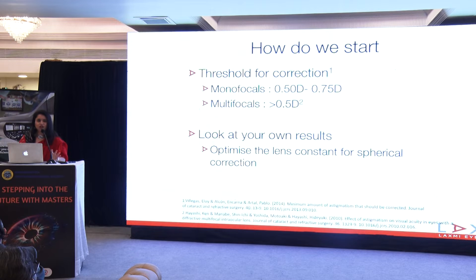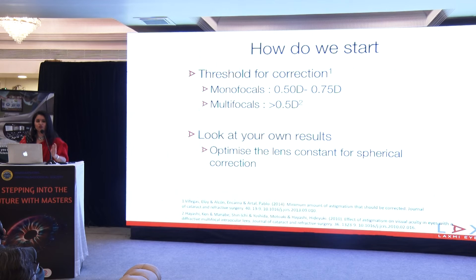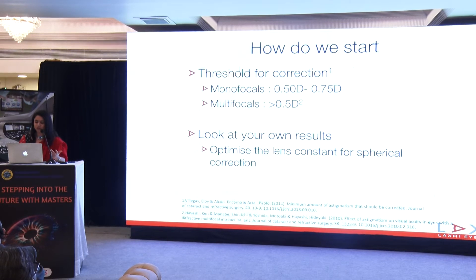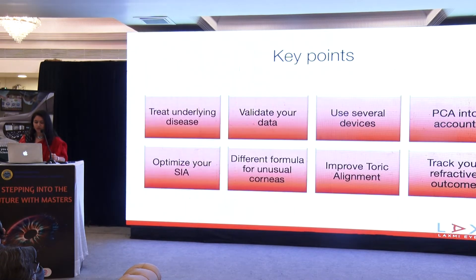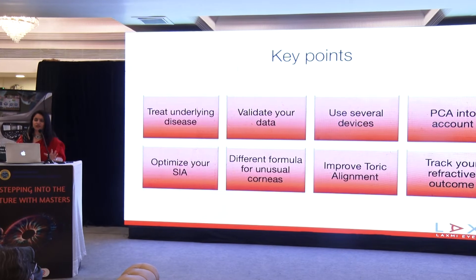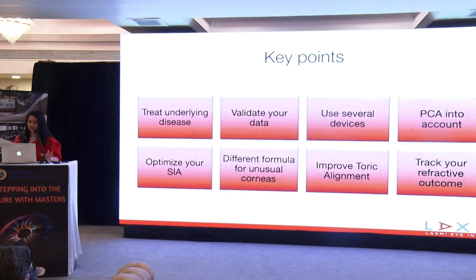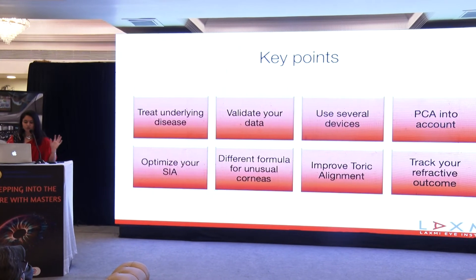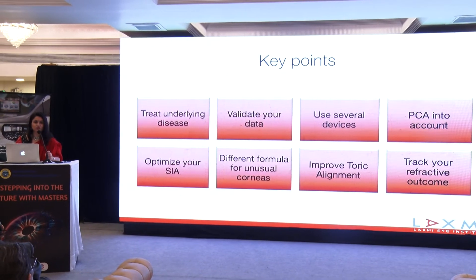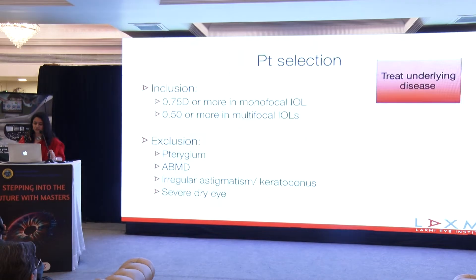A good toric outcome will make sense if your spherical error is to the minimum. So it's a good idea to look at your own results in a non-toric patient and probably optimize your IOL constant, because that will help you to get a good outcome. Astigmatism should be looked at quite systematically, and this protocol helps us do that. Let's look at each of these steps in detail.